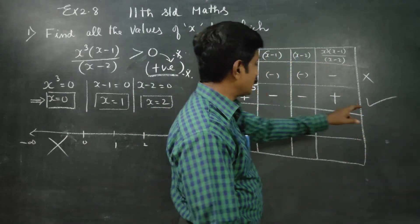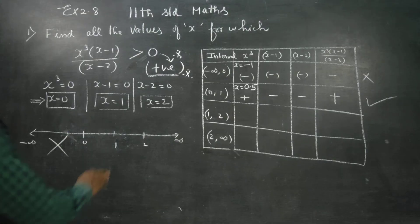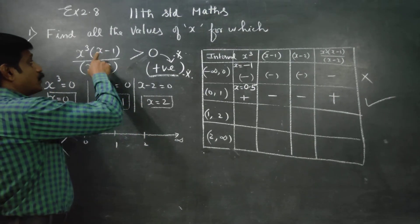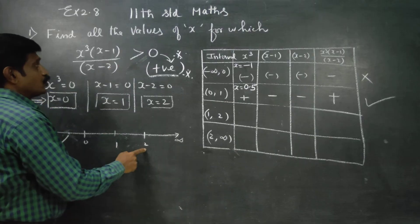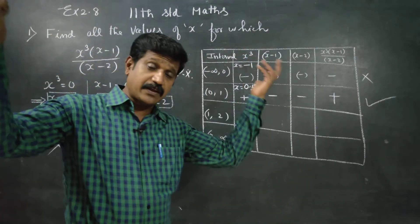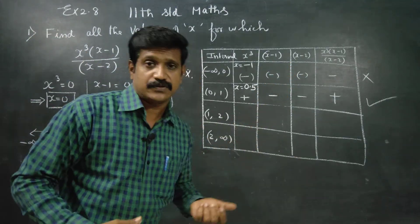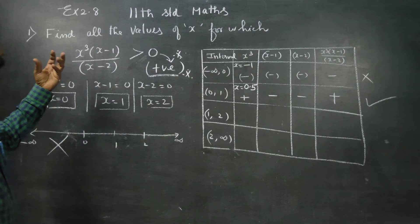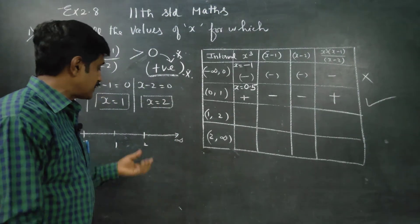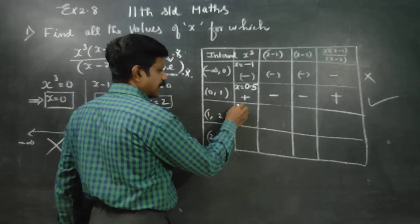Next, for the interval 1 to 2: I cannot use x equal to 1 (makes numerator factor 0) and I cannot use x equal to 2 because that makes the denominator 0, giving infinity. Anything divided by zero is an excluded value — that value cannot be found.